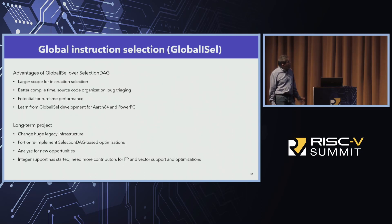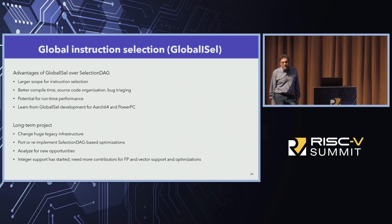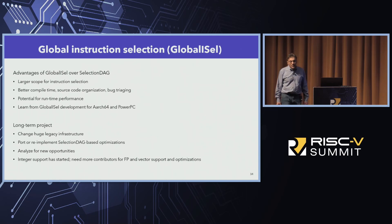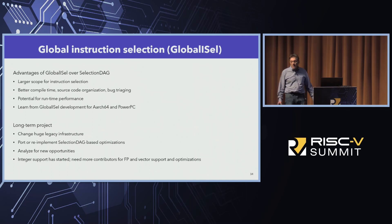Another good area for collaboration and contribution is global instruction selection. There are many advantages of global ISel over the existing SelectionDAG. First, it has better source code organization and faster compile time, which leads to an easier way to triage bugs and maintain the code. Then, because of the global nature of instruction selection, there is potential for performance improvement. And finally, because developers for ARM and PowerPC started several years ago on these projects, RISC-V developers can learn from this initiative. This is a long-term project because you need to replace a huge legacy infrastructure.